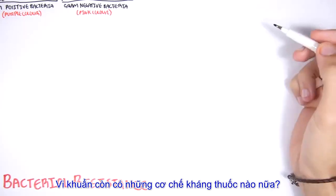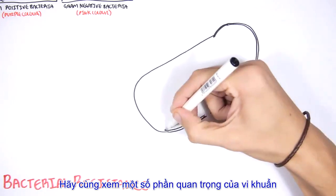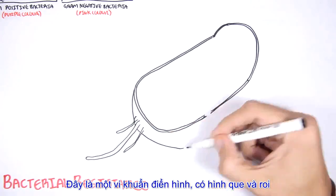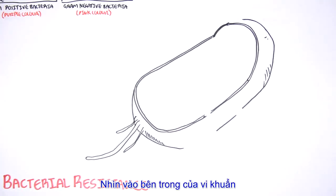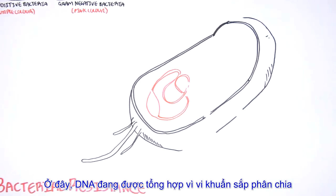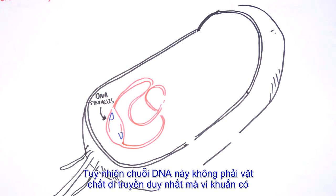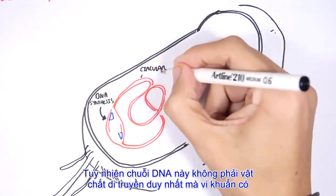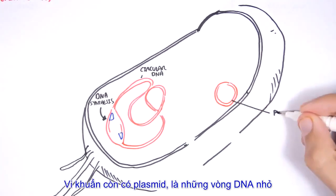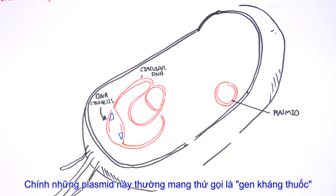So what other types of antibiotic-resistant mechanisms do bacteria have? Let's first go over some important parts of the bacteria. Here we have a typical rod-shaped bacteria with a flagella. One bacteria only has one chromosome, which is one circular DNA. However, this circular DNA is not the only genetic material the bacteria carries. The bacteria also have things called plasmids, which are like super small circular DNAs.